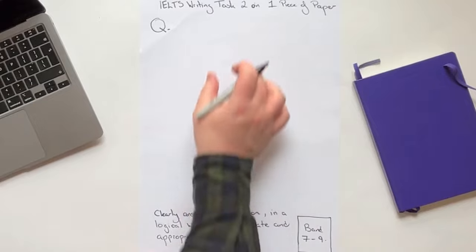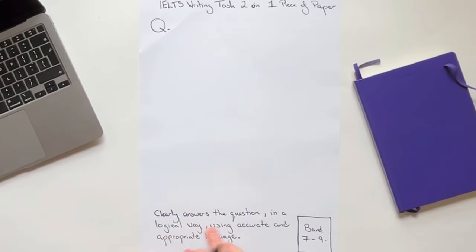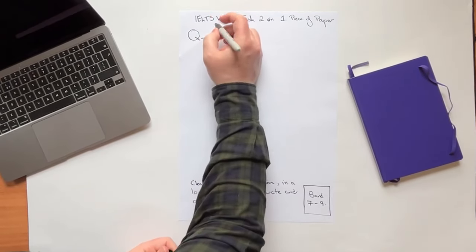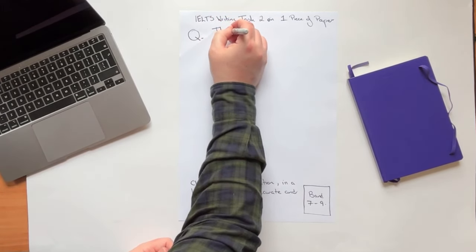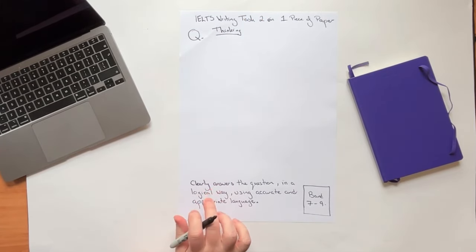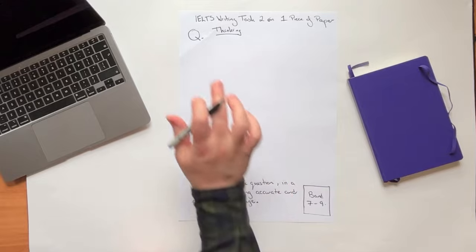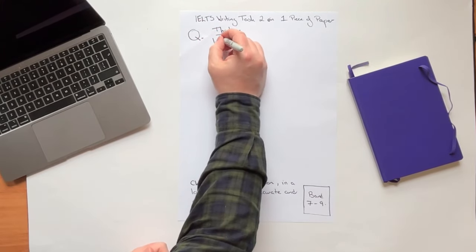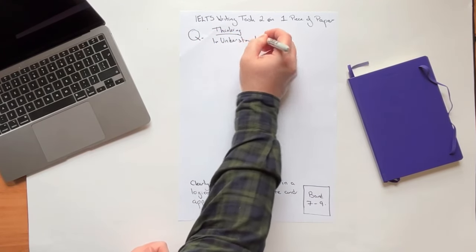So what we're going to do now is show you step by step how to produce an essay of this quality and do these things effectively. So the first stage is what we call the thinking stage. Why is this so important? Well, you have to demonstrate that you can clearly answer the question. So the first step is to actually understand the question.